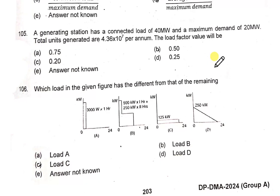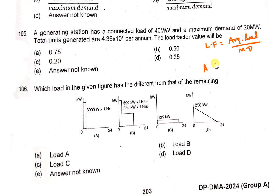Next question: a generating station has a connected load of 40 megawatt and a maximum demand of 20 megawatt. Total units generated are 4.36 × 10⁷ per annum. The load factor equals average load divided by maximum demand. Average load is calculated per annum.